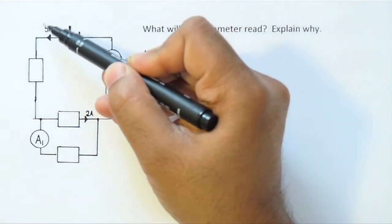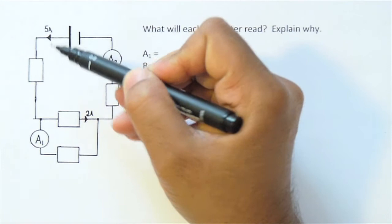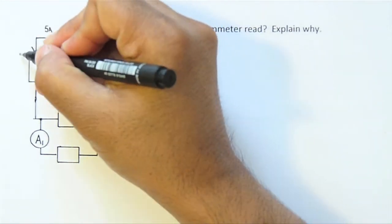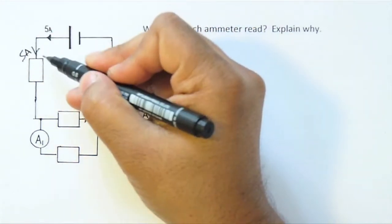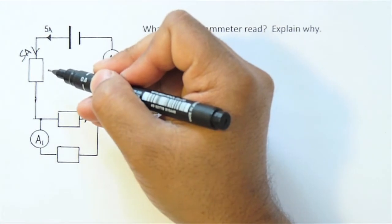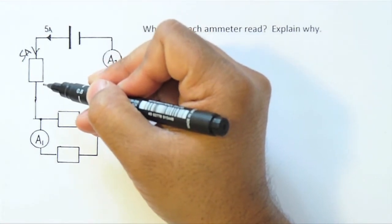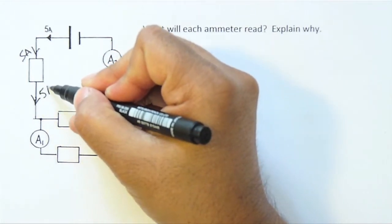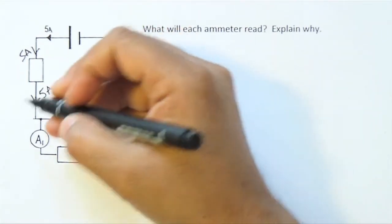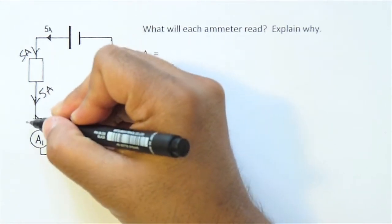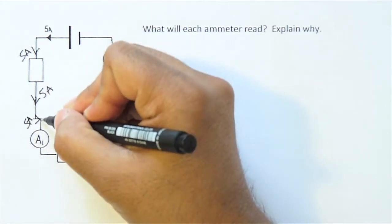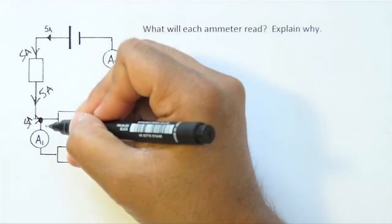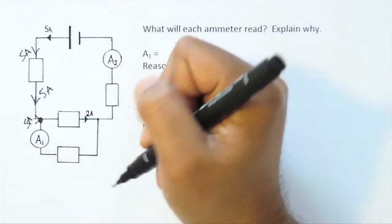You can see we've got 5 amps coming out of the battery here, which means we've got 5 amps going into this resistor. Since current, unlike voltage, is not used up in a resistor, we know we've got 5 amps flowing out of the resistor and so we've got 5 amps flowing into this junction here where the current splits into these two branches.